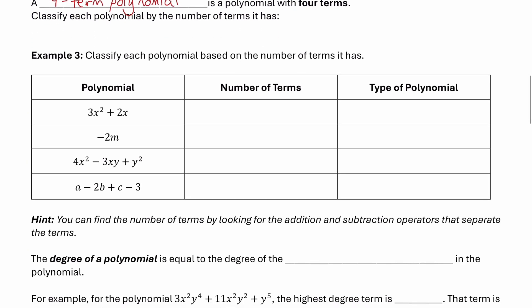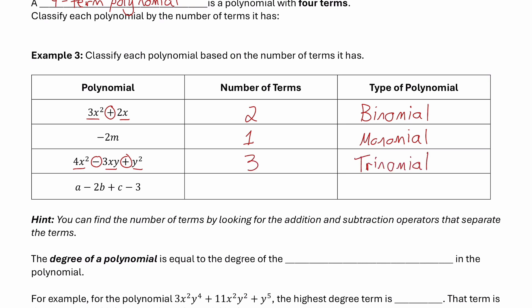In example 3, we have four polynomials and we'll state the number of terms and the type of each. The first, 3x squared plus 2x, has a plus sign separating two terms — it is a binomial. Negative 2m has no terms added or subtracted, so it is a monomial. The third, 4x squared minus 3xy plus y squared, has three terms — it is a trinomial. The last, a minus 2b plus c minus 3, has four terms — it is a four-term polynomial.